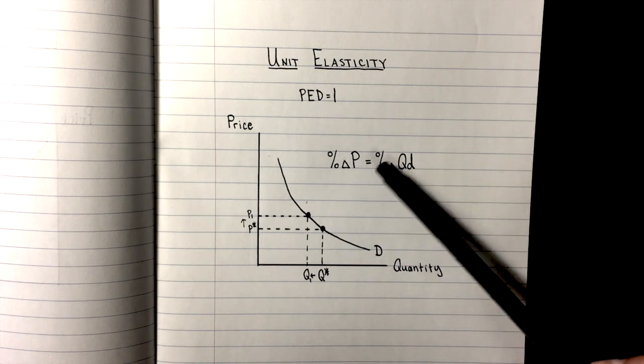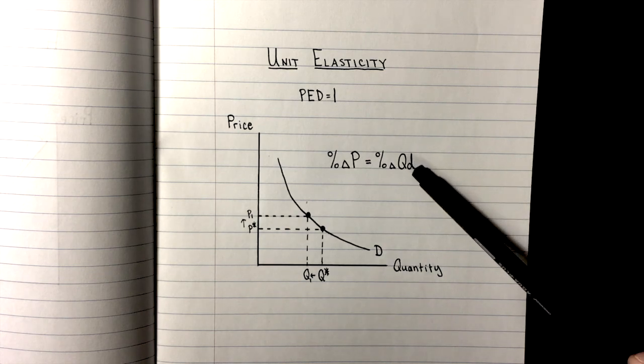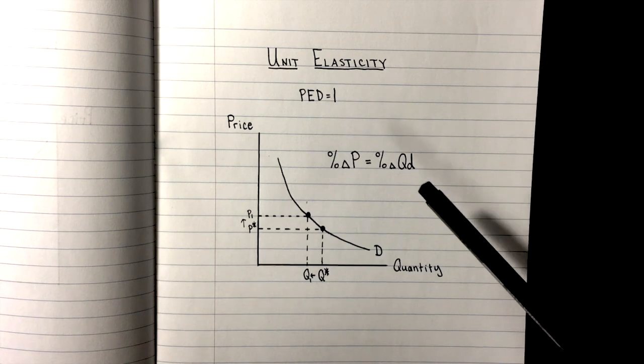That means whatever the change in price is will be equal to the percent change in quantity demanded. So if we have a 10% change in price, then we should see a 10% change in quantity demanded. And this part of the demand curve, you'll see equal percent changes in both price and quantity demanded.